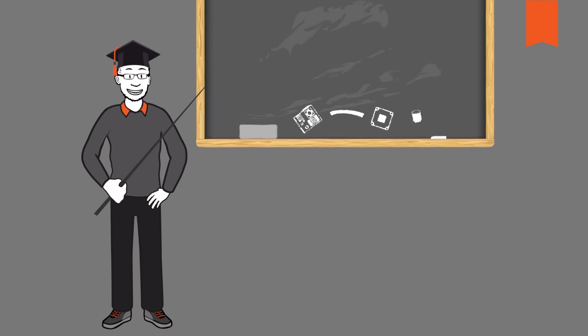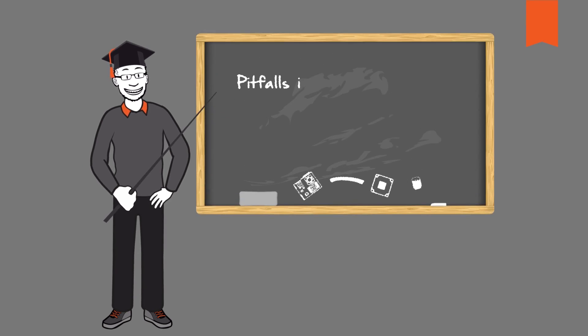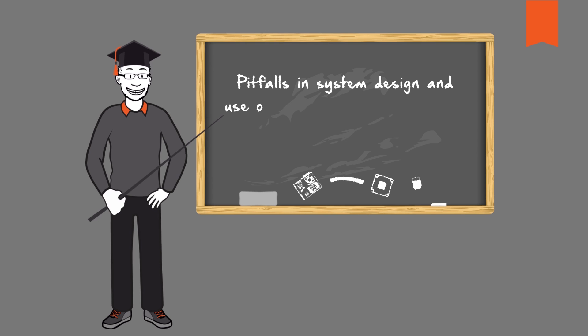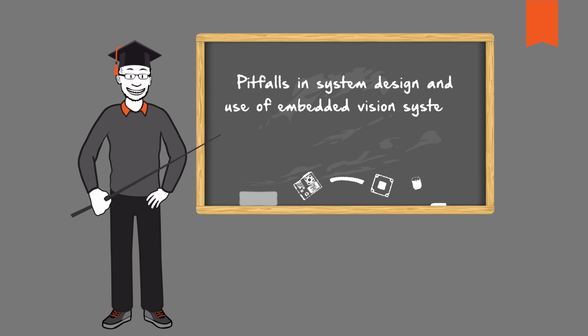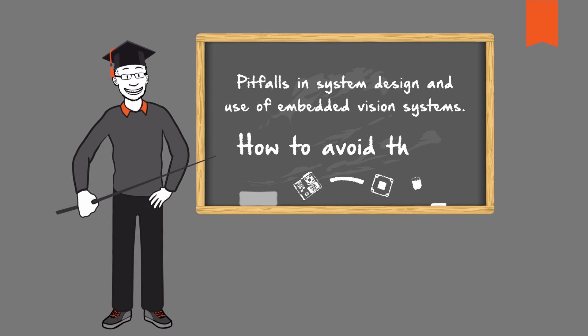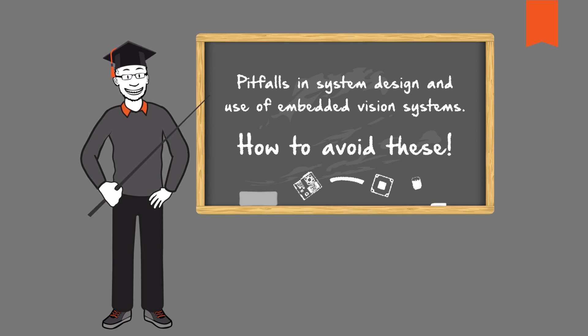It is normal and even sometimes very useful that mistakes are made when entering new technological paths, because mistakes are excellent opportunities to learn from. But you don't have to make every mistake by yourself. We show some of the most common pitfalls in system design and use of embedded vision systems and explain how to avoid these. This saves time, money, and of course a lot of nerves.